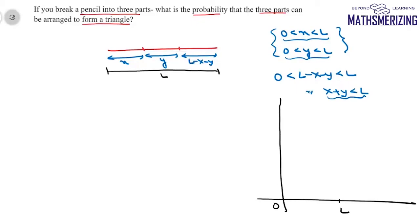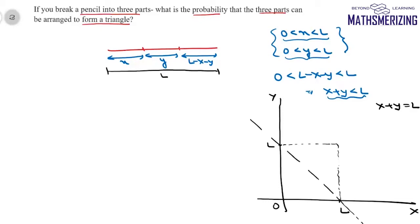We plot this region on a coordinate plane. The x-axis goes from 0 to l and the y-axis from 0 to l, giving a square. The third condition x+y < l is a straight line through (l,0) and (0,l). Putting the origin in gives 0 < l, which is true, so the sample space is represented by the triangle below this line, with area equal to the area of that triangle.